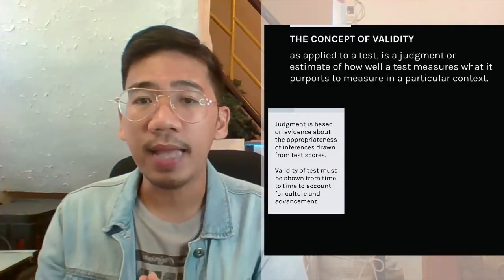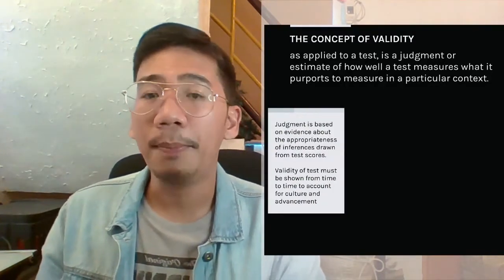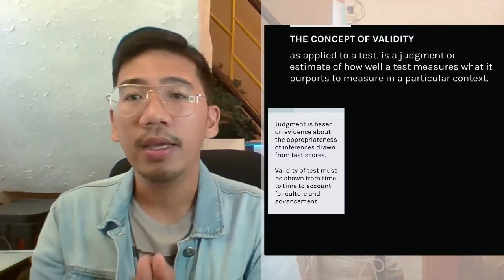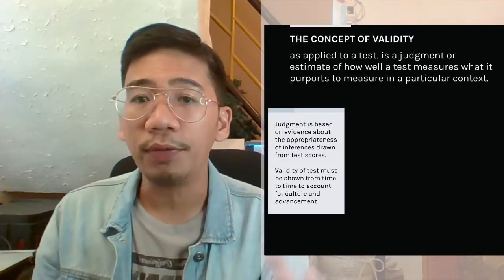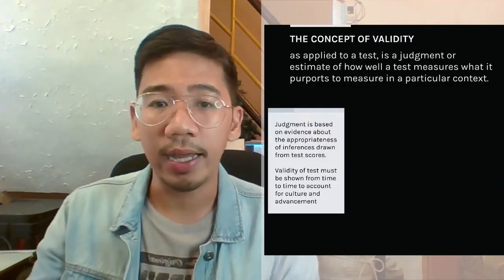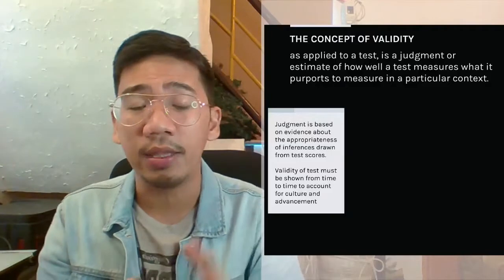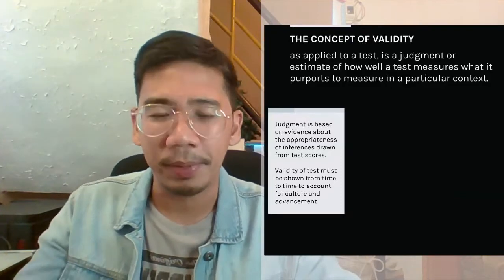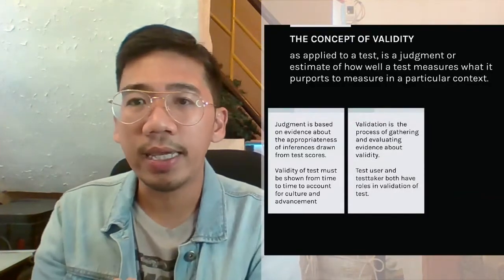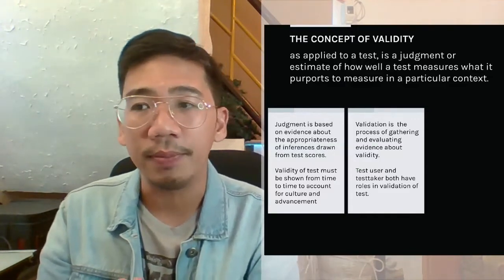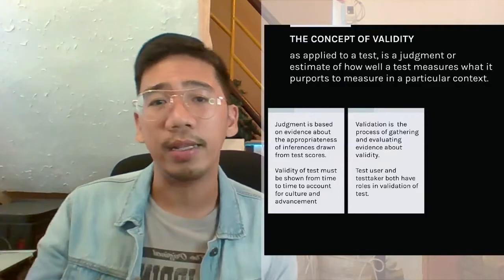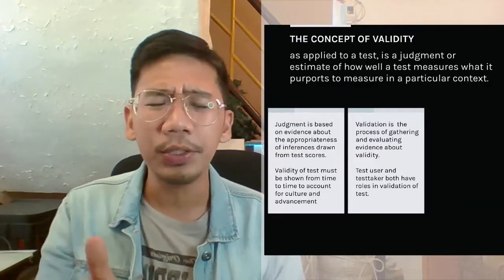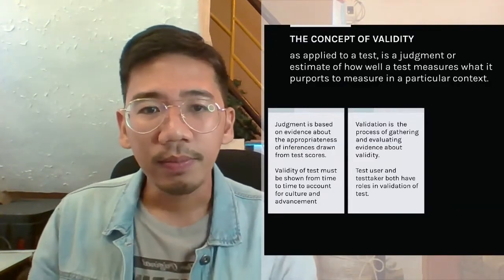This judgment is based on evidences about the appropriateness of inferences drawn from test scores. We have to understand that validity of a test must be shown from time to time to account for culture and advancement, as both culture and development can influence the result of someone's test. Validation is a process of gathering and evaluating evidences about validity.